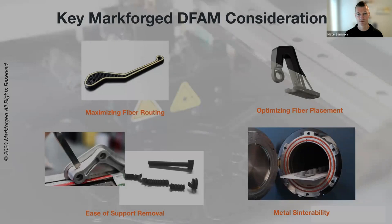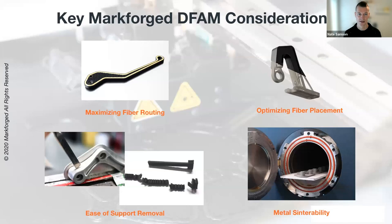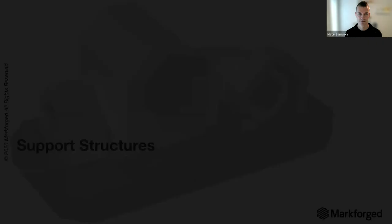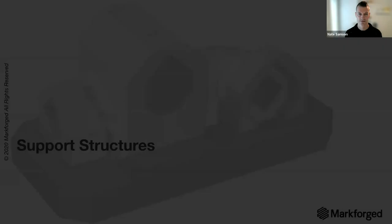Markforged-specific considerations include the ability to add continuous fiber — knowing where it makes sense to add fiber, since we don't necessarily need to completely fill the part with fiber but rather add it where it best resists stresses. On the metal side, having a plan for support removal is important. Markforged has a dual extrusion system with ceramic release for easy separation, but even separable supports can be physically trapped by part geometry. Understanding the sintering process — whether the part will sinter properly — is also key.